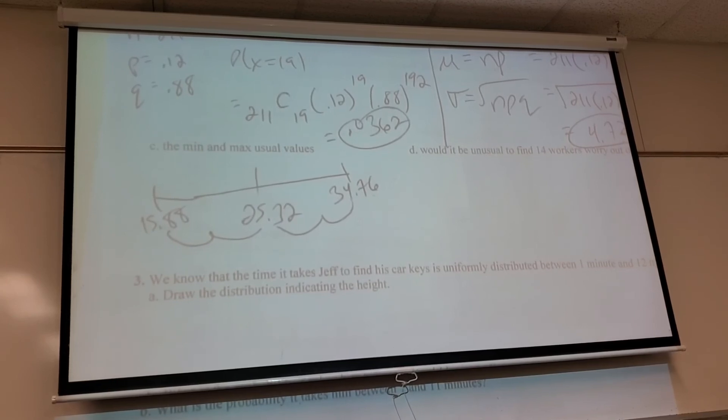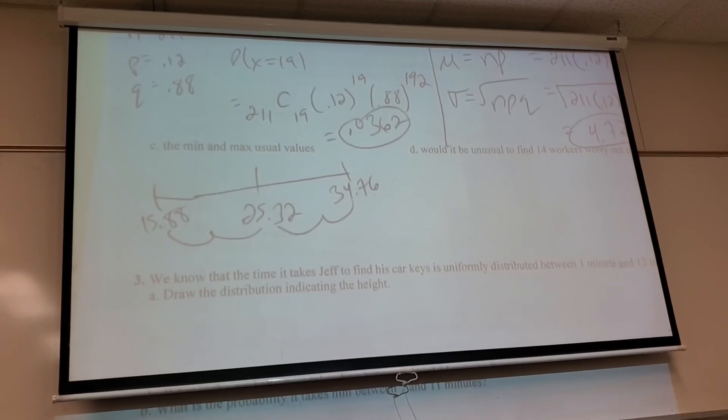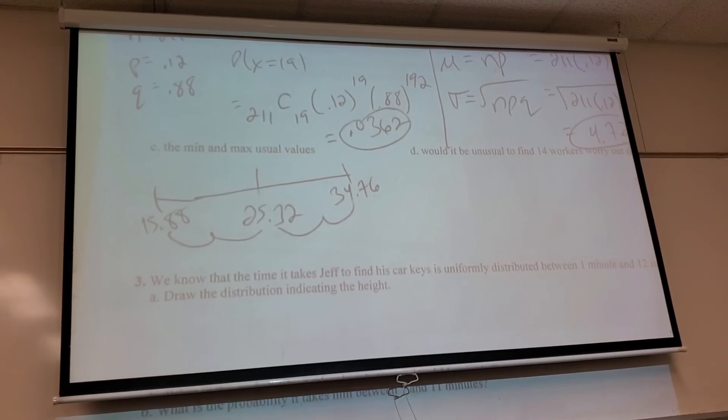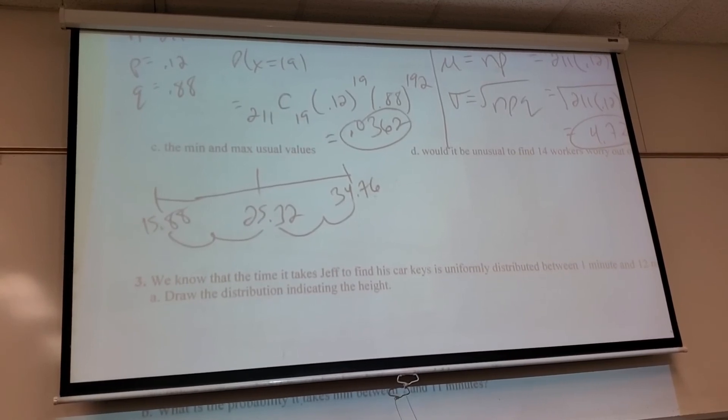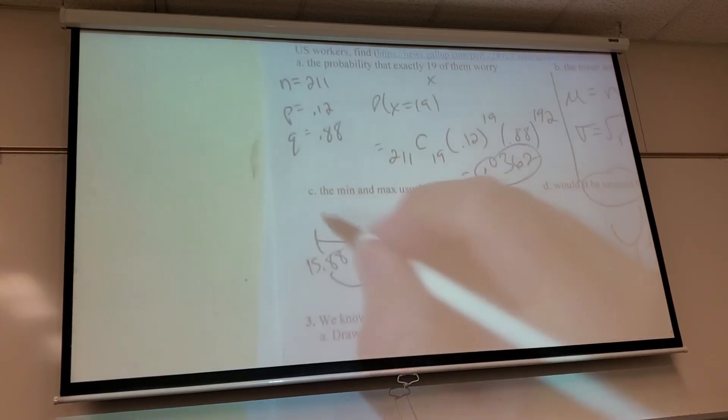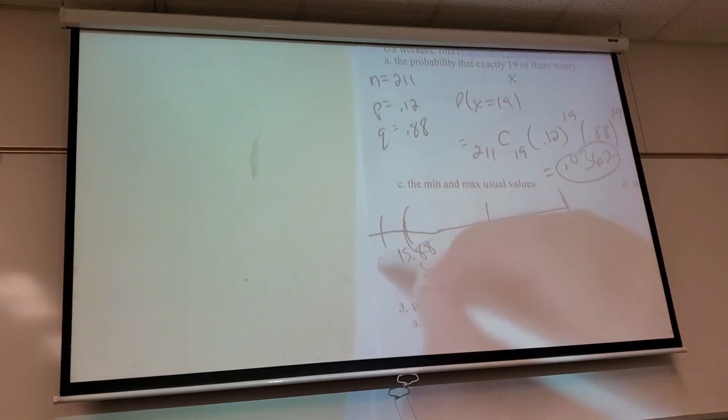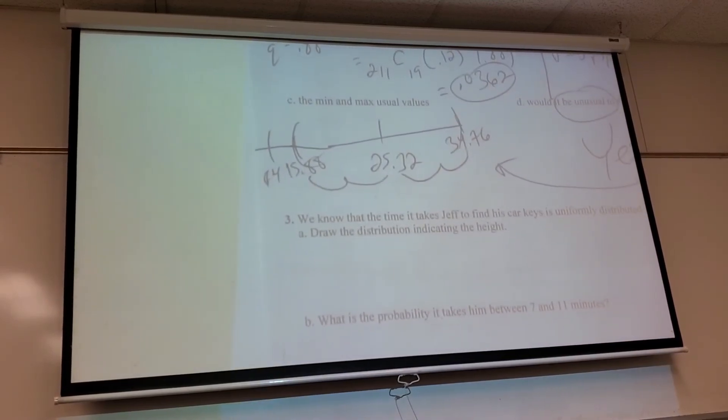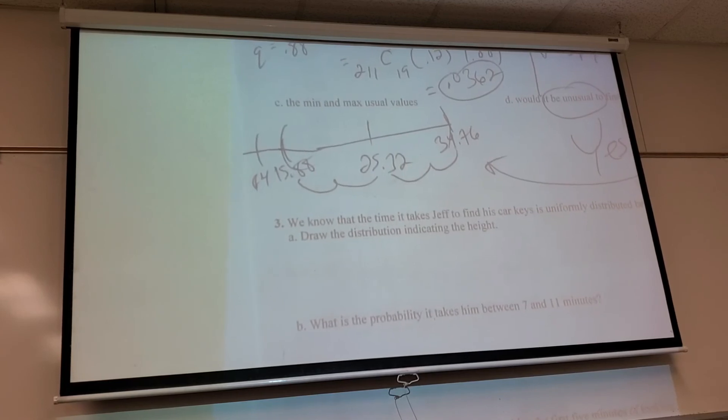Since this is number of people, then I would say anywhere from 16 to 34 would be usual. If I got that amount, I wouldn't be freaked out. So part D says, what if you see 14? It's unusual. That would be unusual. For some random group of 211 workers, if I only saw 14 of them were worried, I'd start to wonder where am I? Something's different about this area. It's outside of what's usual, so it's unusual.